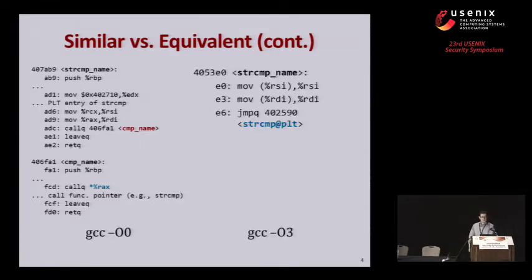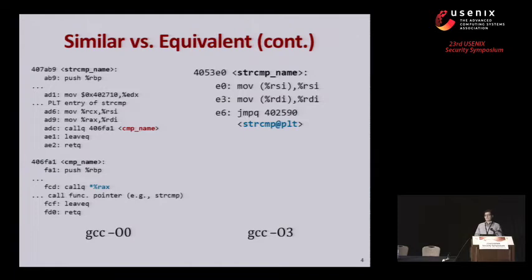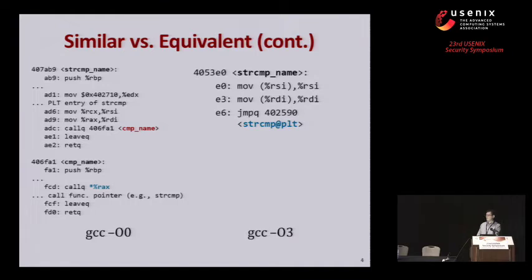If you compile the exact same source code with GCC optimization level O3, the result is starkly different. For example, inlining took place — instead of two individual functions, we only have one. Furthermore, constant propagation occurred: the compiler determined that in the calling context of strcmp_name, only one function pointer value is ever used — namely the string compare function in libc — so that value was inlined directly. There is also no register spilling to set up stack frames. Meaning, if you evaluate strict equivalence, those two code snippets are not equivalent: running the left example on a full stack would immediately terminate execution, whereas the right-hand side would at least continue into the strcmp function.